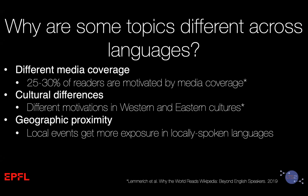We have two possible explanations for these results. First, different media coverage — studies show that 25 to 30% of Wikipedia readers are driven by media. Second, differences between Russian and Western cultures: readers from Eastern cultures tend to have intrinsic learning motivation when coming to Wikipedia, which explains the domination of the topic of science among Russian-speaking readers. Finally, local events get more exposure in locally spoken languages.